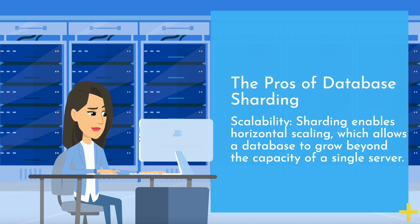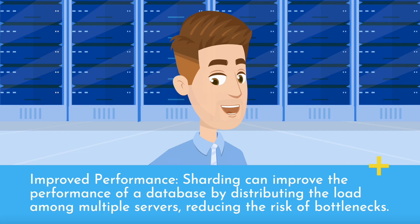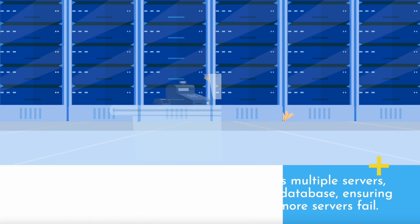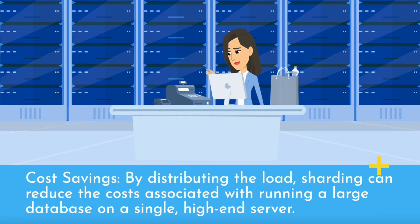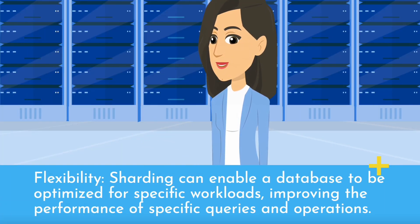The pros of database sharding. Scalability: sharding enables horizontal scaling, allowing a database to grow beyond the capacity of a single server. Improved performance: sharding distributes the load among multiple servers, reducing the risk of bottlenecks. High availability: by replicating data across multiple servers, sharding ensures the database continues to operate even if one or more servers fail. Cost savings: distributing the load reduces costs associated with running a large database on a single high-end server. Flexibility: sharding can optimize a database for specific workloads, improving the performance of specific queries and operations.